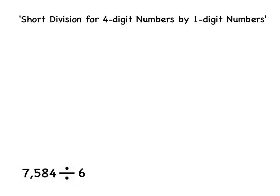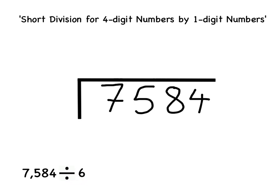I'm first going to write the bigger number, 7584. Because I want to divide into 7584, I'm going to draw two sides of a box around this number using a ruler. Because I'm dividing by 6, I'm going to write a 6 here.